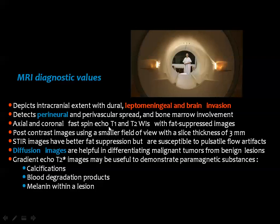For MRI, we use T1 and T2 images supported by the fat suppression technique, with slice thickness in the range of 3mm. STIR images are helpful in fat suppression to see bone marrow lesions in this area. Diffusion-weighted images are extremely important in evaluation of the head and neck in general, and skull base lesions in particular. Gradient or T2-star images can show the blooming effect in cases where calcium is present, hemorrhage, hemosiderin, and sometimes melanin.